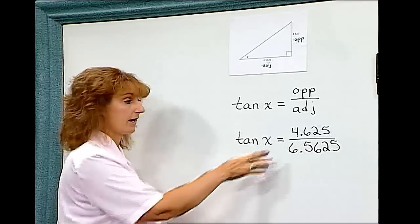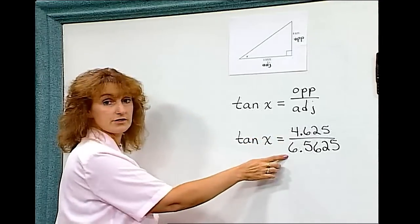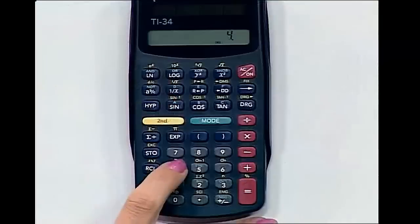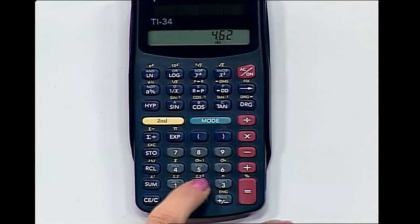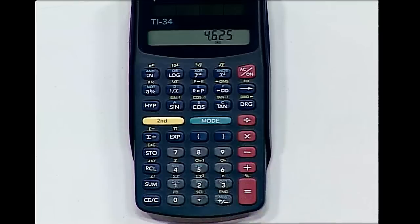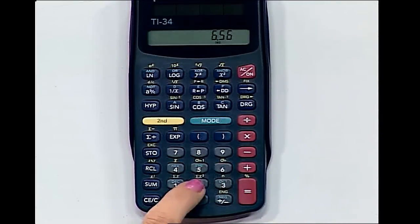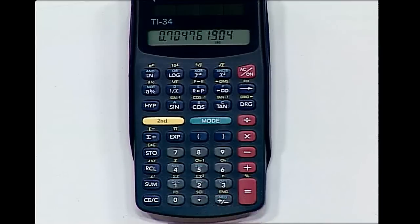Now I can go to my calculator and enter this division problem. Making sure it's cleared first, 4.625 divided by 6.5625 equals, and I get this answer of 0.70476, etcetera.